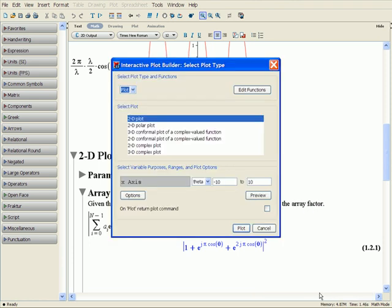This time, we'll select the Plot Builder from the context menu and specify a range for theta. This convenient assistant lets us create different kinds of plots and animations, as well as set options such as variable ranges, colors, and tick mark spacing.